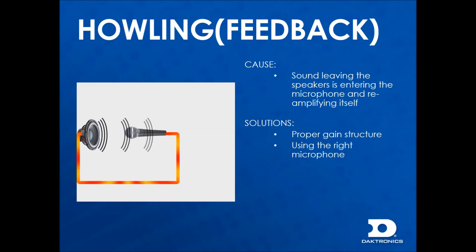The headset is the better option because it is closer to the mouth and therefore needs less gain to amplify the referee's voice. This means that less of the sound system will be picked up in the microphone thereby reducing the chance of feedback.